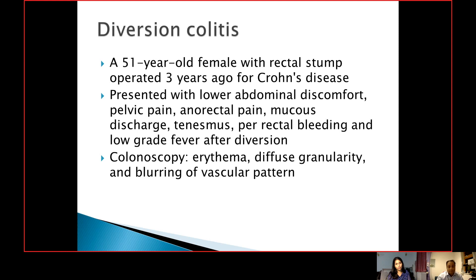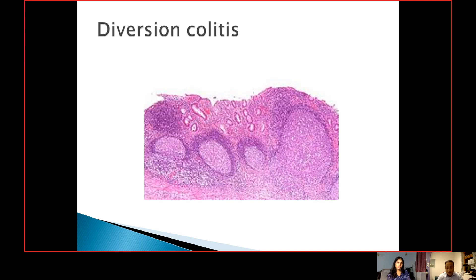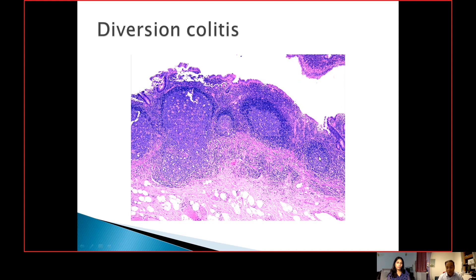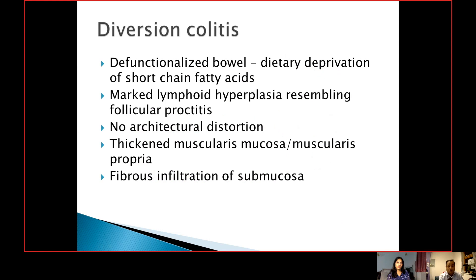On H&E at low power, you can see this crypt which is pretty much unremarkable, but what is most striking is these lymphoid aggregates with prominent germinal center formation, giving the appearances of a follicular proctitis. On higher power, the same finding — you can see marked lymphoid aggregates with prominent lymphoid follicle and germinal center, and very few unremarkable crypts. This is due to defunctionalized bowel with dietary loss of short-chain fatty acids, normally produced by gut bacteria. There is marked lymphoid hyperplasia resembling follicular proctitis, with no architectural distortion.